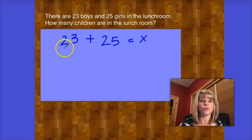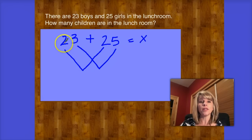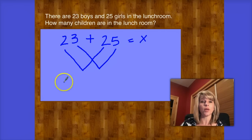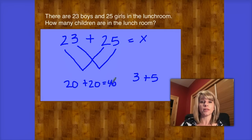For the splitting strategy, we're going to take a look at the tens, and I draw a line from one ten to the other — it makes a V. Then I also draw another line that connects the ones from the first number to the ones in the second number. If I look at these two tens and these two tens, what I really have is 20 plus 20. And over here I have 3 ones plus 5 ones, so that is 3 plus 5. 20 plus 20 equals 40, and 3 plus 5 equals 8.